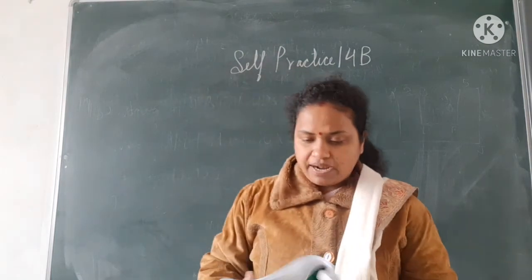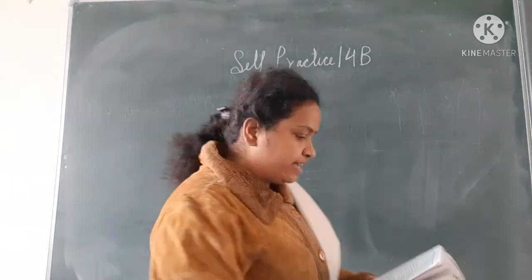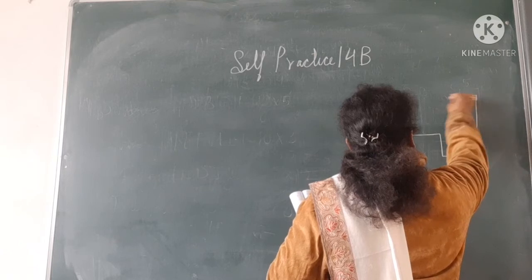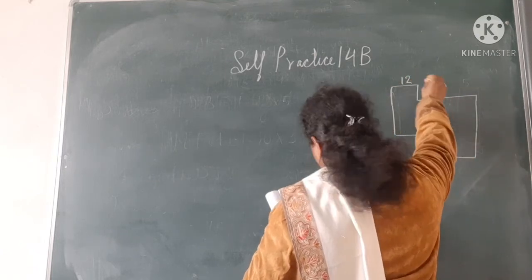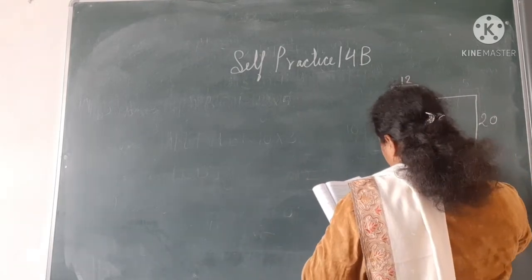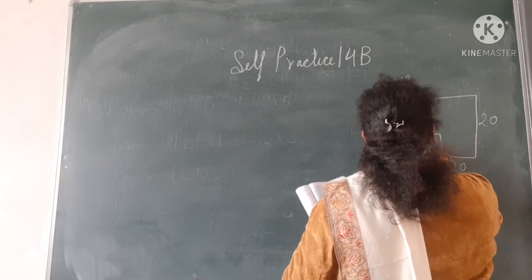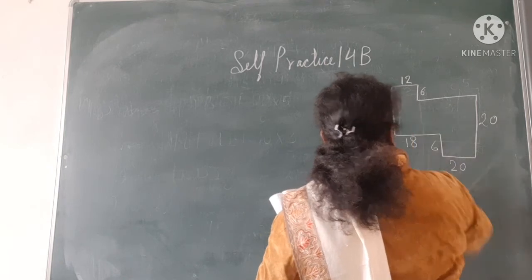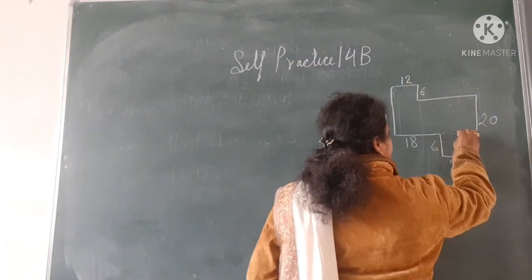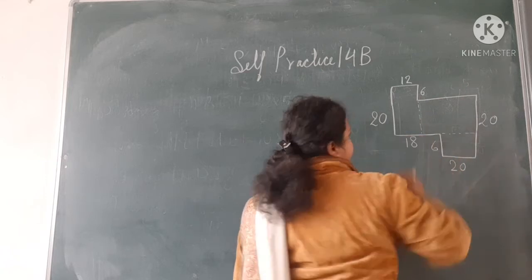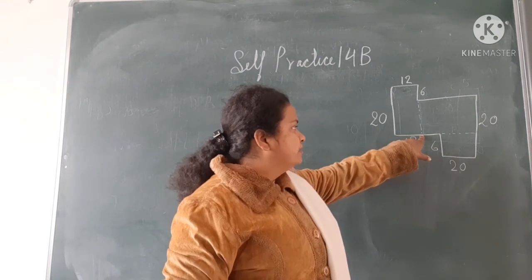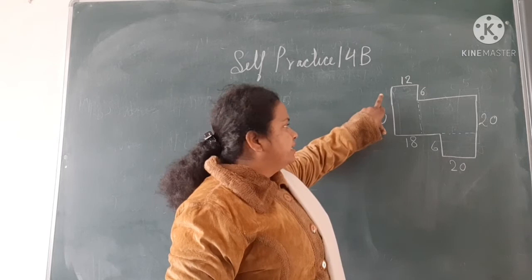Let's solve question 12C. The figure dimensions are 12, 6, 20, 20, 6, 18, and 20. I draw two small dividing lines. This side is 12 and this side also will be 12. The total base length is 20. From one side adding 6 and 20 gives 26 centimetre. And 20 minus 6 equals 14 centimetre.